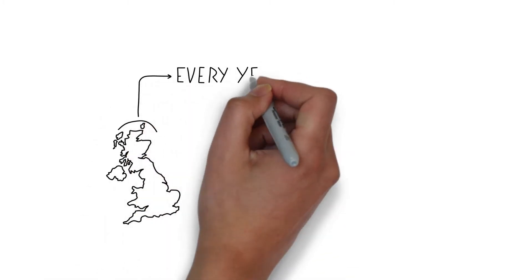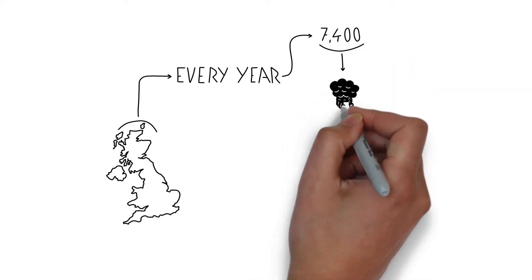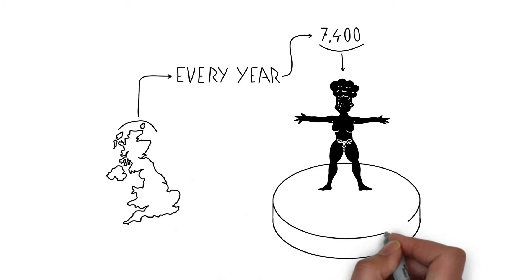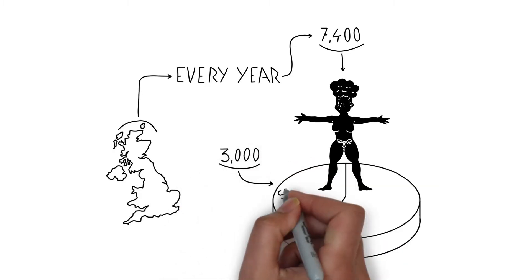Every year in the UK around 7,400 women are diagnosed with ovarian cancer and fewer than 3,000 of these will survive for five years or more.